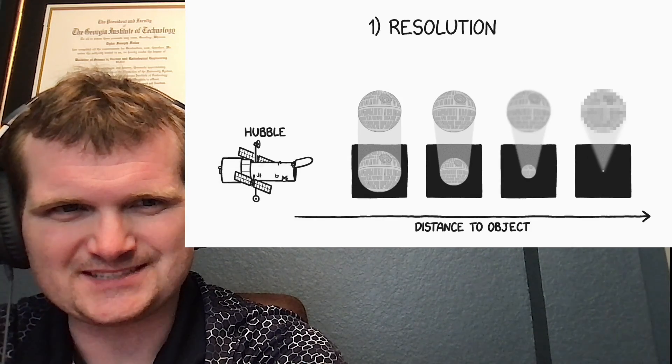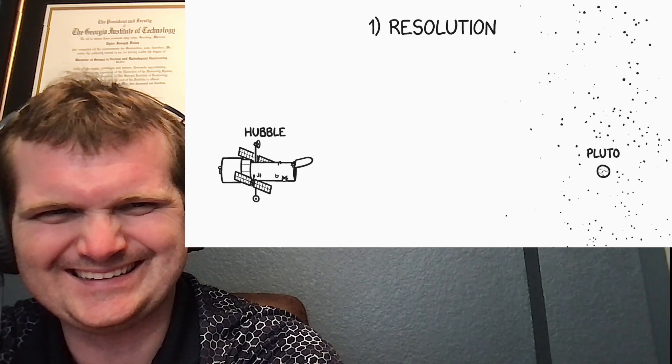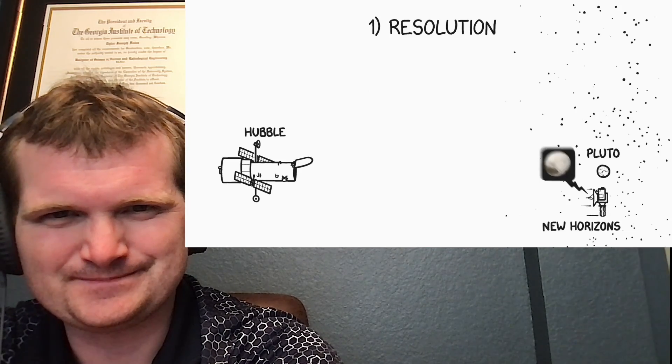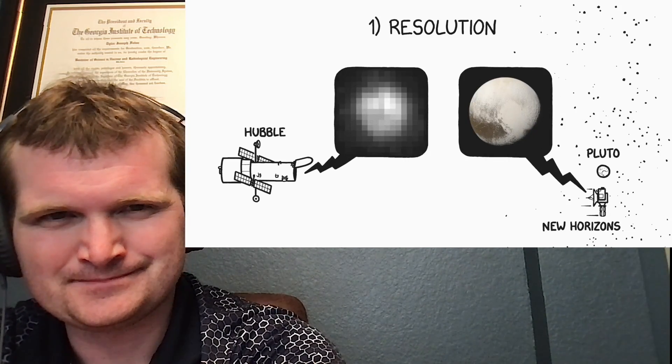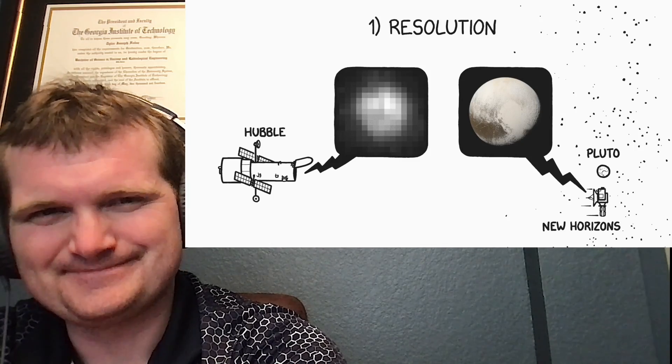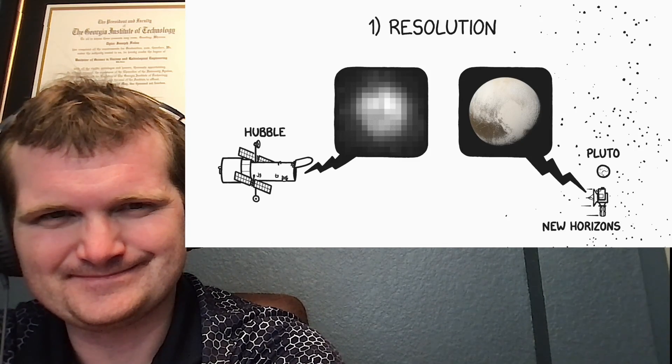But its resolving power does have limits. Pluto out in the Kuiper Belt lies right at those limits. Until the New Horizons flyby of Pluto, the best pictures we had of Pluto were from Hubble, and they were pretty bad. To Hubble, the ex-planet is little more than a mysterious blur. With Hubble's resolution and distance from the desk, the desk would look like this.